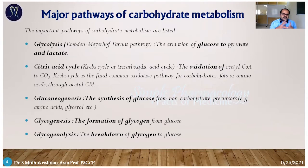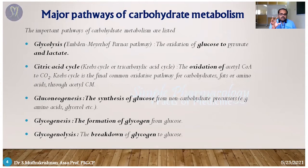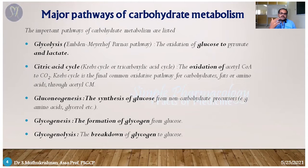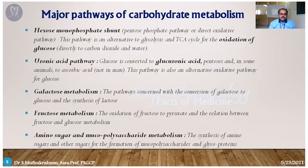Gluconeogenesis is the pathway where glucose is synthesized from non-carbohydrate material when we don't have glucose. From non-carbohydrate material, glucose is synthesized to supply to the cell. Next, glycogenesis means formation of glycogen — formation of glycogen from glucose. When we have excess glucose, it is converted into the condensed form, glycogen. Conversely, when we don't have glucose, stored glycogen breaks down to produce glucose — that process is called glycogenolysis.